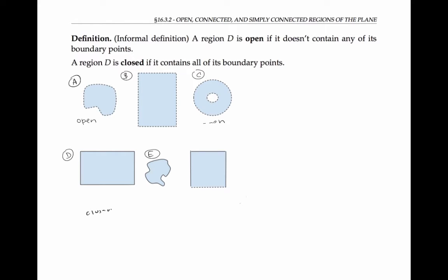The next region, which I'll call E, is also not open. In fact, it's also closed. This final region F contains some of its boundary points, but not all of them. Since it doesn't contain all of them, it can't be closed. But because it contains some of them, it can't be open either. So region F is an example of a region that's neither open nor closed.